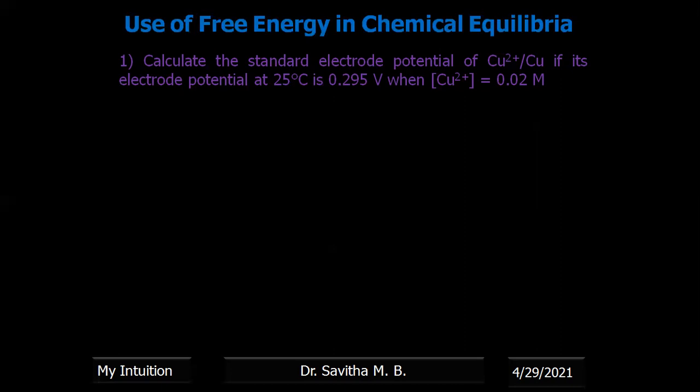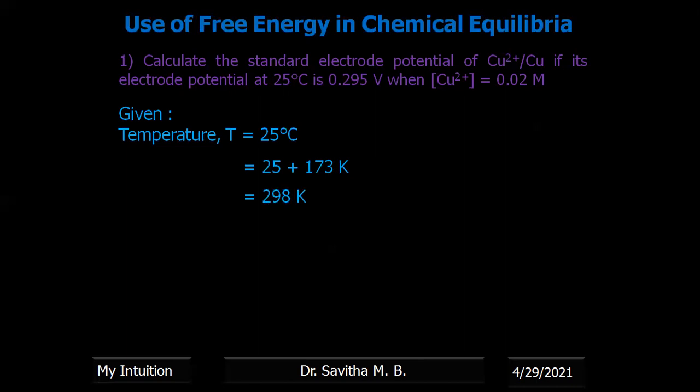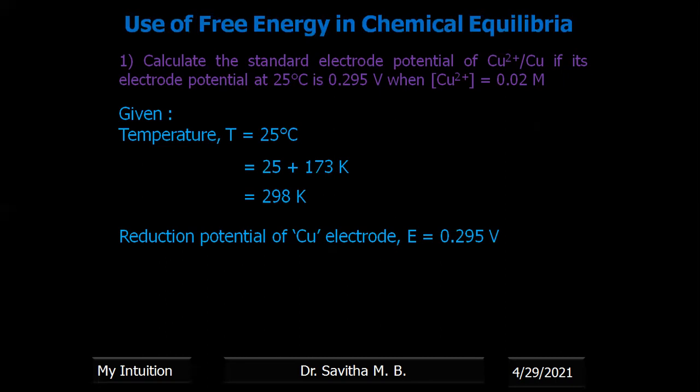The question asks us to calculate the standard electrode potential, that is E° of copper, whereas E of copper is given. The temperature given is 25°C. Converting to Kelvin scale by adding 273, we get 298 K — that is the standard temperature. Therefore the temperature in this problem is the standard temperature.